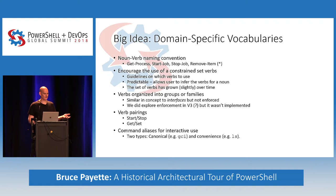And then command aliases for interactive use against the whippetupitude thing. There are two types of aliases: canonical aliases like GCI for Get-ChildItem, which are specific to PowerShell, and convenience aliases like ls or dir. This worked pretty well on Windows but got us into trouble when we moved to macOS and Linux, because we were now hiding some of the existing commands on those platforms — especially curl, which was a big problem.